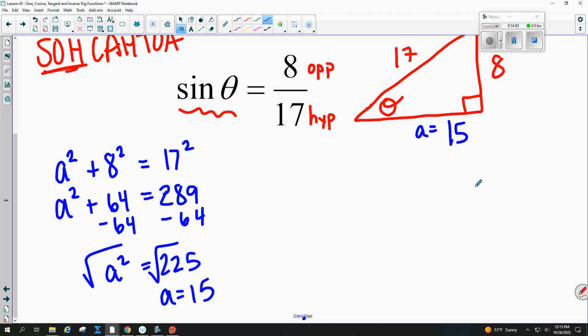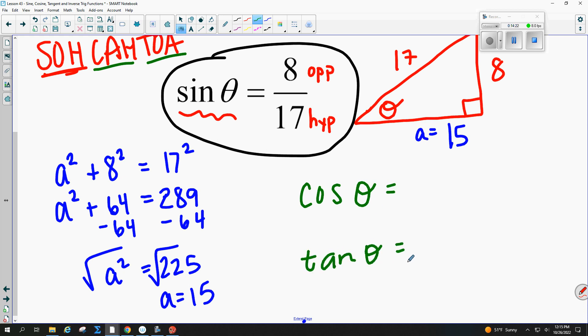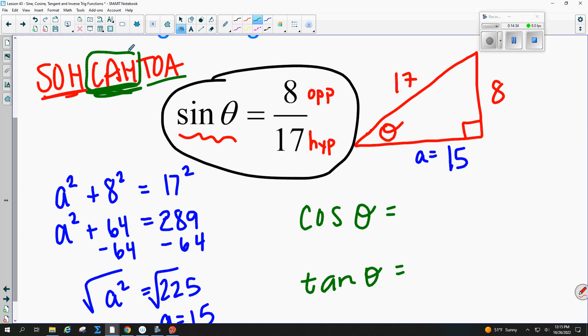Now it says in the problem, find the missing two trig functions. I have sine. I need cosine and tangent. So I want cosine of theta and I want tangent of theta for my answers. If you look at your little formula, CA is adjacent over hypotenuse. Here's my CA. Which side's adjacent? 15. Which side's hypotenuse? 17. So there's your cosine. Now tangent is TOA, meaning opposite over adjacent. Which side is opposite? 8. Which side is adjacent? 15. And those are your two answers.